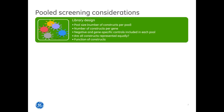Some important considerations for pooled screening include: library design with appropriate pool size, depth of coverage, controls, and equal construct representation; maintaining high fold representation throughout the screen — we recommend at least 1,000-fold; the type of phenotypic selection; whether genes will be enriched or depleted; assay specifics such as cell type, T1 time point, and treatments; and performing the screen with biological replicates — a minimum of two, with triplicates recommended.